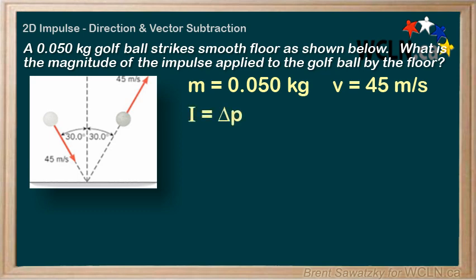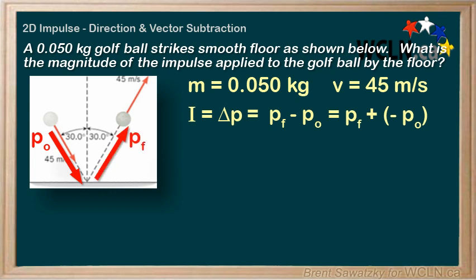So, let's go with our second definition the change in momentum which we can expand to pf minus p0. So, definitely a 2D vector situation. We have angles in here. So, a vector subtraction and as shown we can adjust this to pf plus negative p0. So, let's go to our diagram and let's label some things p0 the original momentum before the bounce in the direction of the velocity and the pf the final momentum after the bounce again in the direction of the rebounding velocity and now we'll sketch a negative p0.